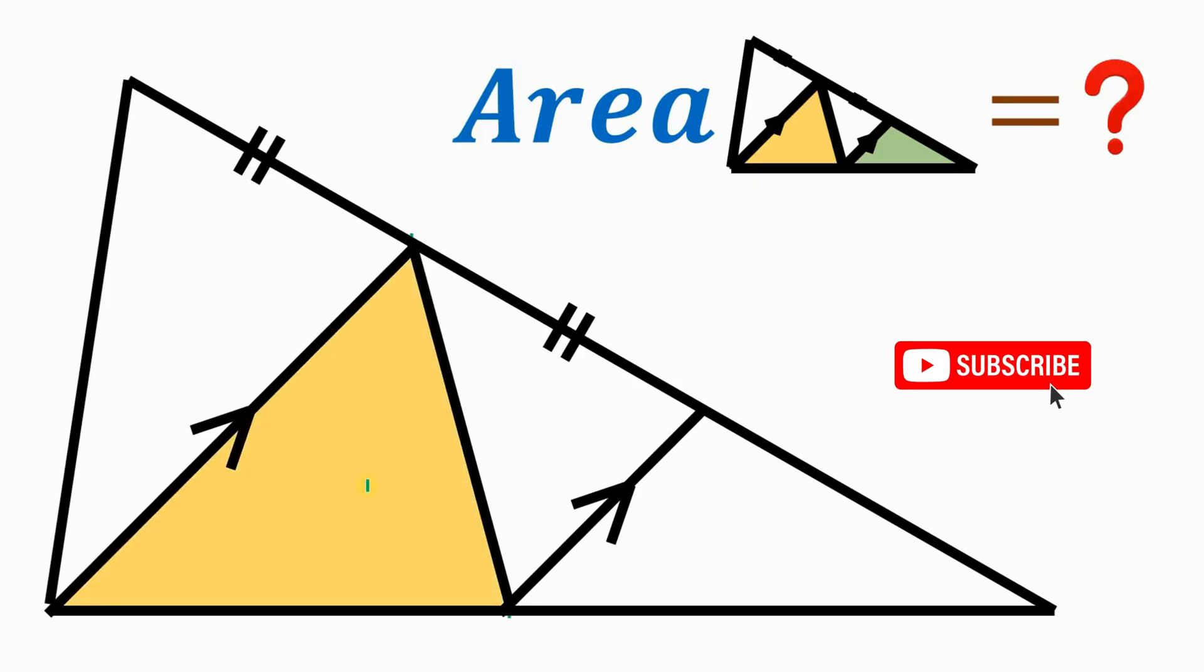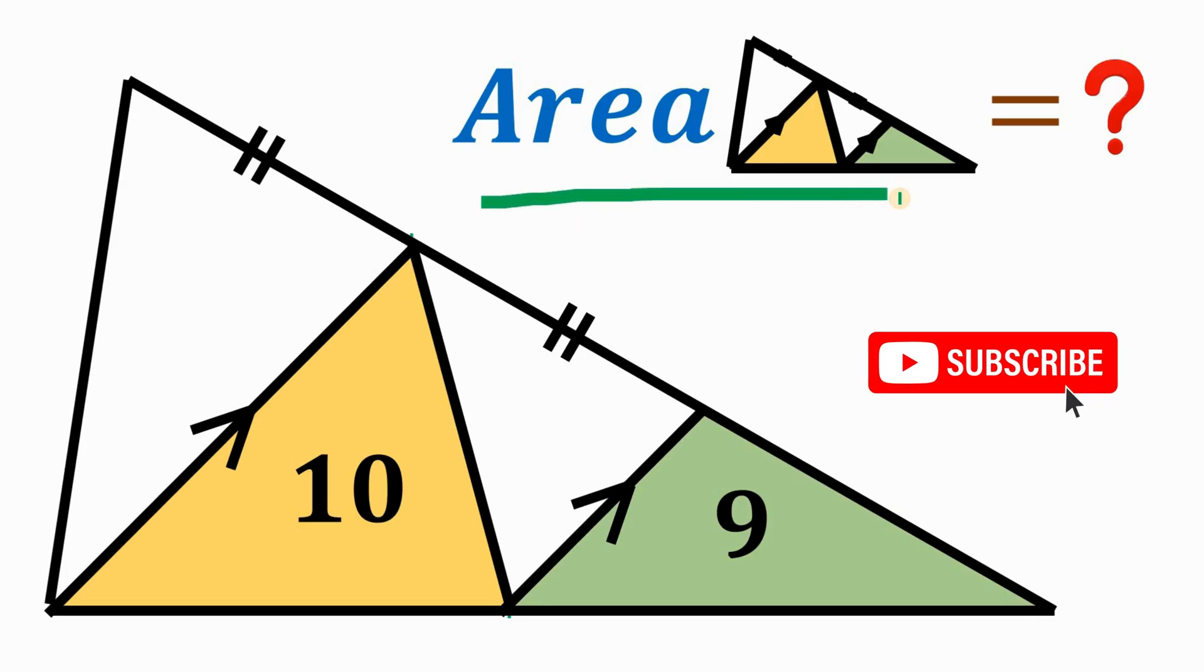Now this triangle, the area of this is given as 10 square units. And the area of this rightmost triangle is given also as 9 square units. Now the question is, what is the area of the whole triangle?